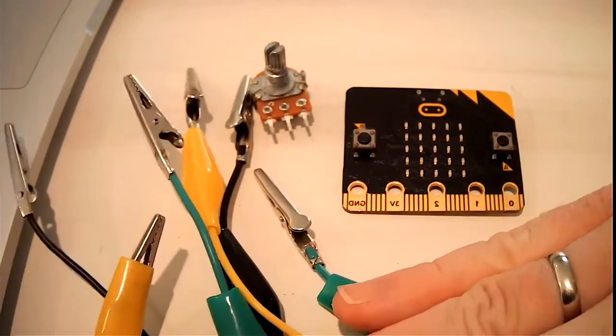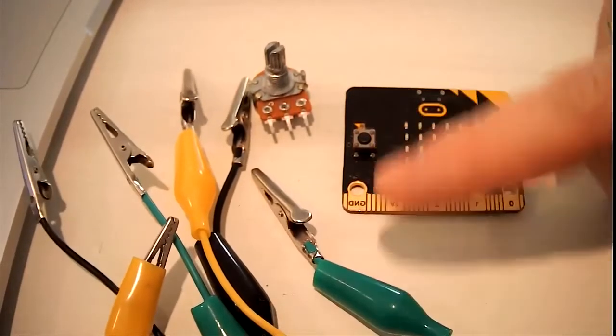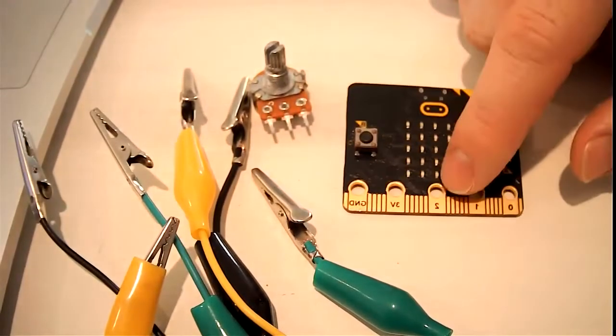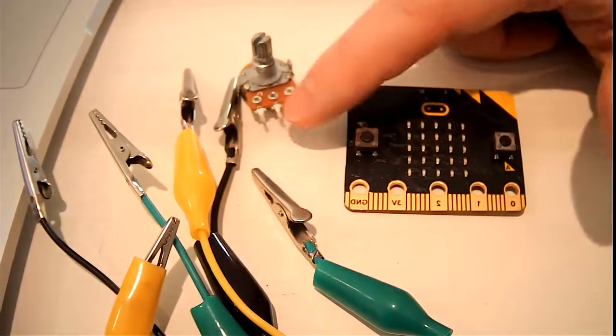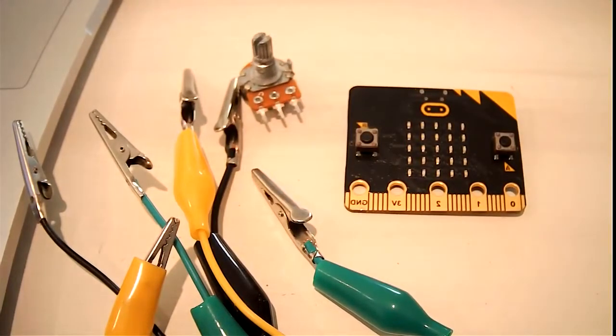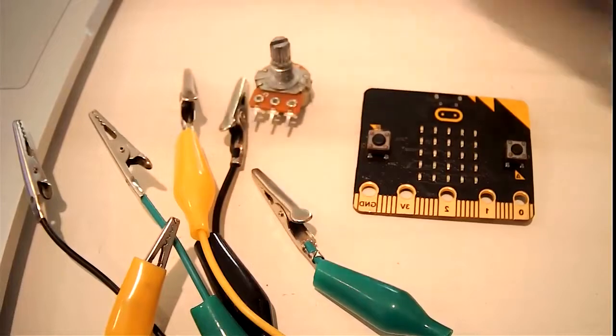The color of the alligator clip does not matter, but it does need to correspond from the correct port on your microbit to the correct pin on your potentiometer. So I'm going to work from left to right.